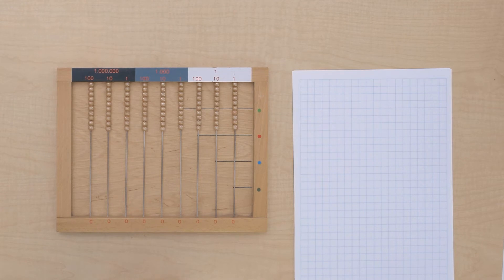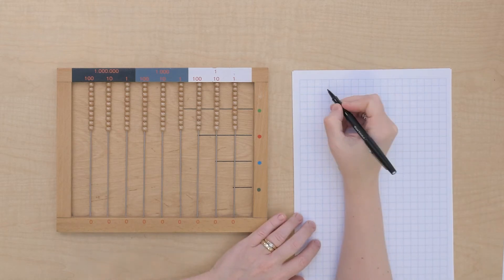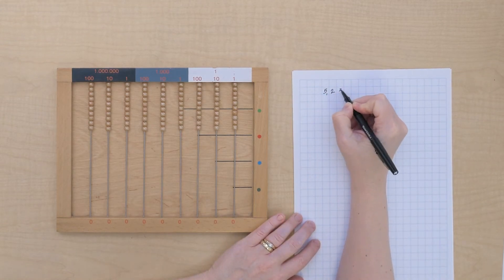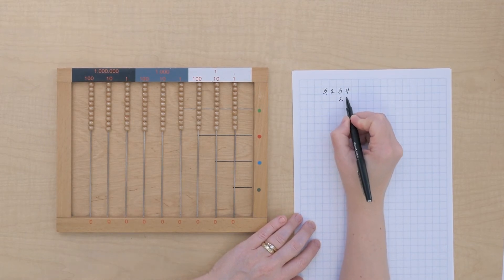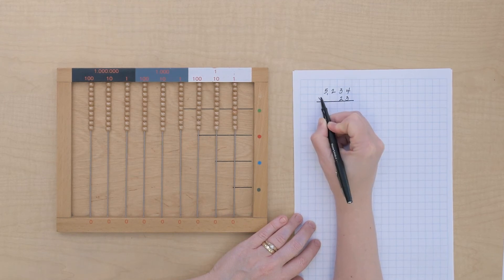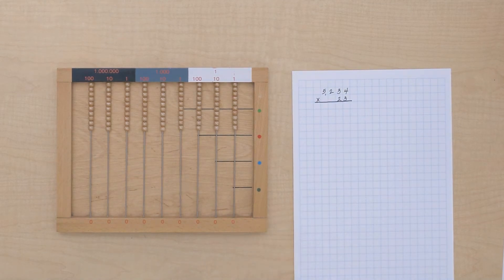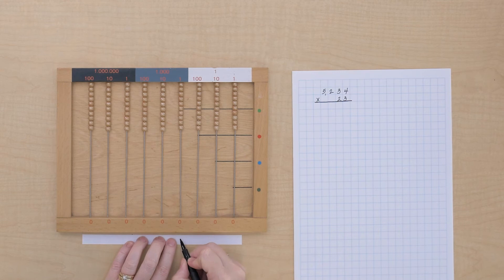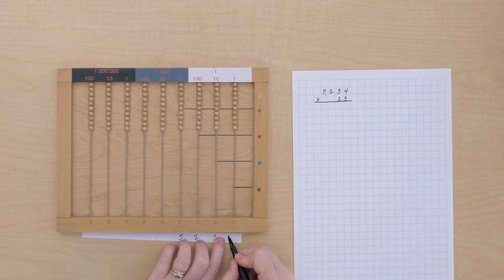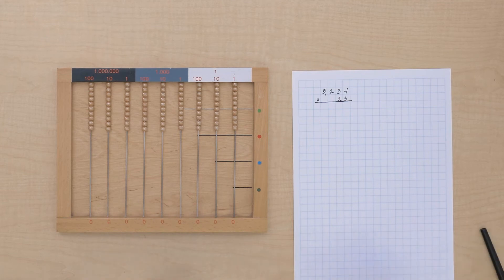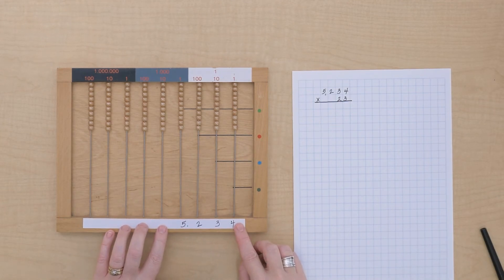So let's go ahead and try a multiplication. I'm going to write down a problem. Let's do 5,234 times 23. So let me show you how we make this on the frame. We need a strip of paper here for our multiplicand. And I will write 5,234. I want it to line up with its category, so there we go.